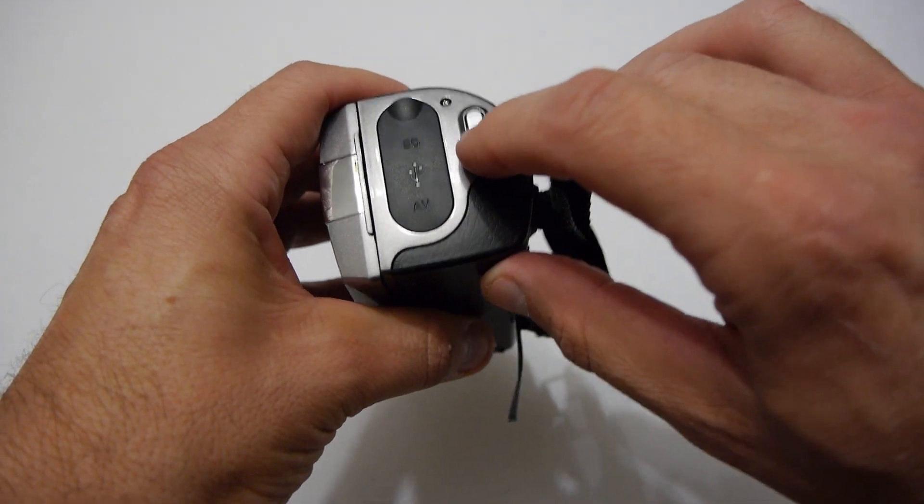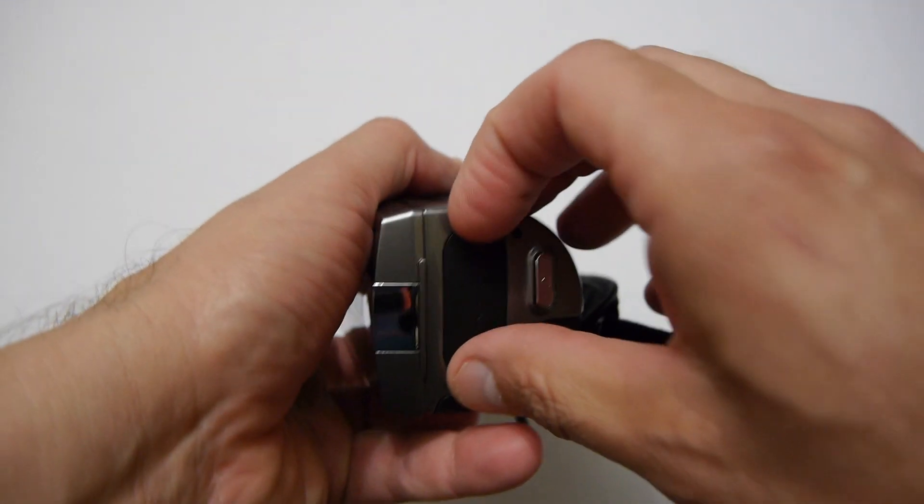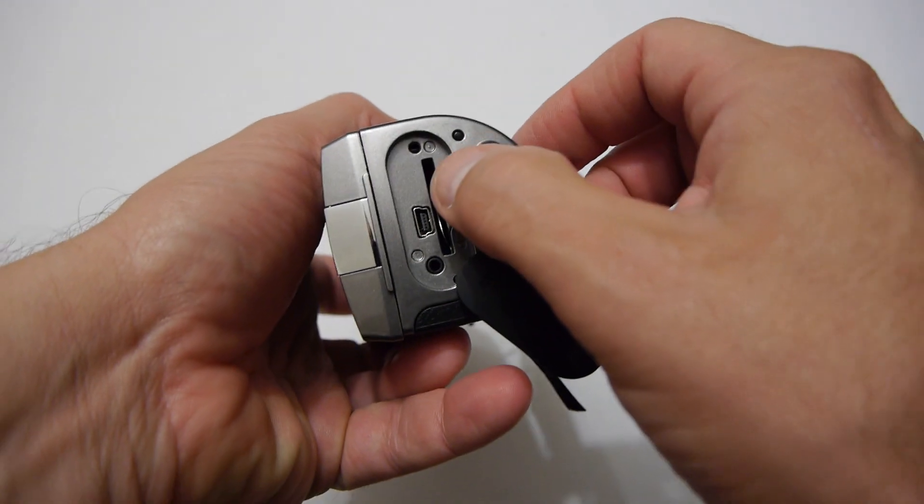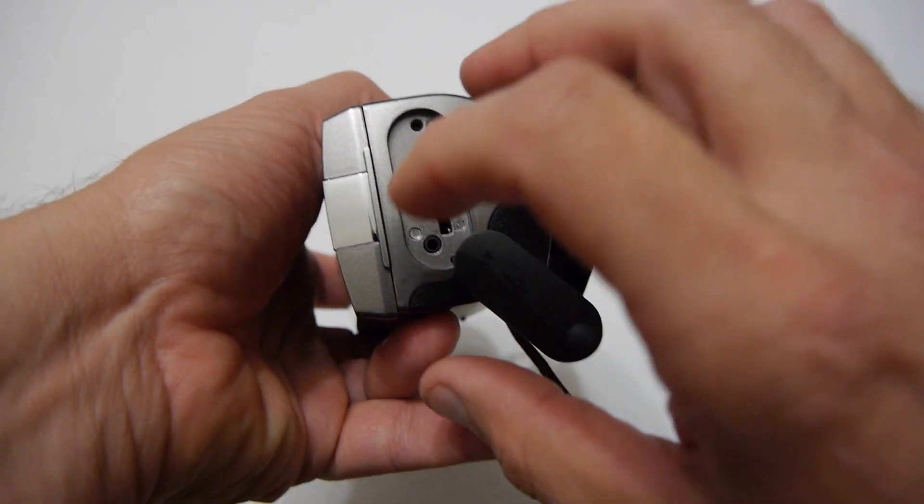You've got your stop start button for recording, you've got a tripod mount, you've got some connectors here which is basically an SD card full size, USB and also the AV out which is just in standard definition.